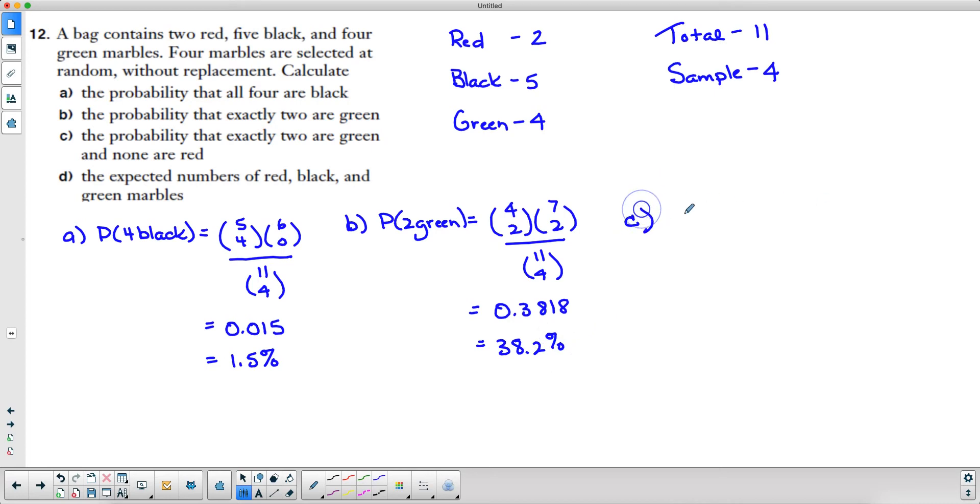Moving along, part c says the probability that exactly two are green and none are red. If we have two green, that means I've got four and I'm choosing two of them from the greens. If I've got no red, that means everything's coming from the black, so the other two have to be black. So five choose two, and of course the total number down here is 11 choose four again. Plug that into your calculator and we get 0.1818, which is 18.2 percent approximately.